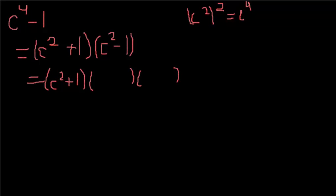We do the same thing we did. We find the square root of C squared which, of course, is C to the first power. I'll just leave it at C and then C plus one and C minus one. And there is our final answer.